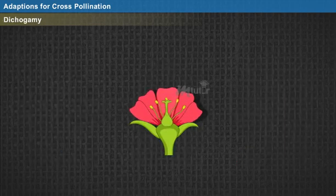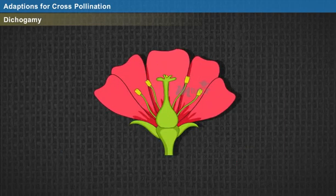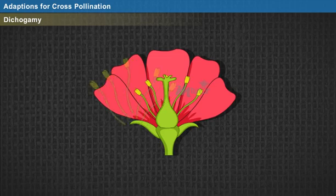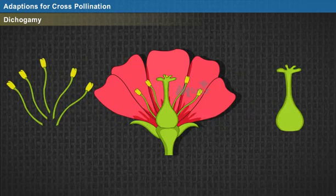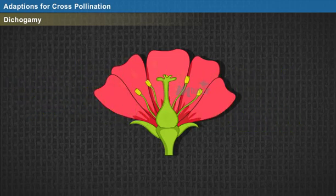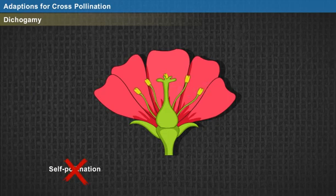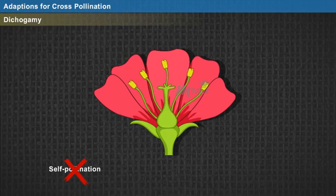Dichogamy: in some bisexual flowers, although the male and female parts are present in the same flower, self-pollination is hindered because the anther and stigma mature at different times. In such a case, fertilization occurs only through cross-pollination.